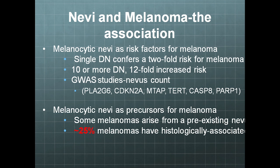According to a number of clinical studies, there is a close link between nevi and melanoma. If we look at very well-done epidemiological studies, melanocytic nevi are risk factors — a single dysplastic nevus on the skin confers a two-fold risk for melanoma. If you have more dysplastic nevi — and these could be clinically or pathologically defined as dysplastic, but mostly these are clinically dysplastic nevi — 10 or more dysplastic nevi confer a 12-fold increased risk.